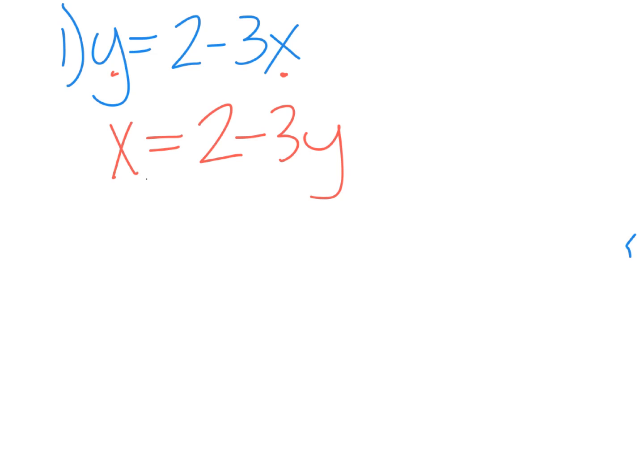Now the only thing you have to do is isolate and get y by itself, so it means we have to move the 2 and the negative 3. So let's first move the 2 by subtracting 2 from both sides, gives you x minus 2 equals negative 3y.